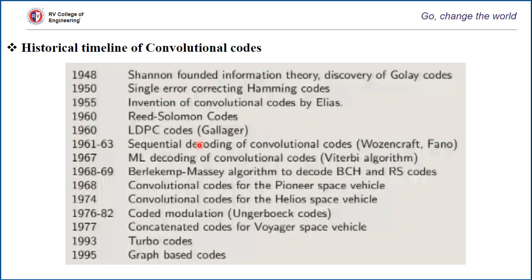Around 1961 to 1963, Wozencraft and Fano came up with sequential decoding of convolution codes, which allowed decoding of convolution codes using very large memory orders. Around 1968 in particular, the Viterbi algorithm became famous, which used a maximum likelihood algorithm for decoding of convolution codes.